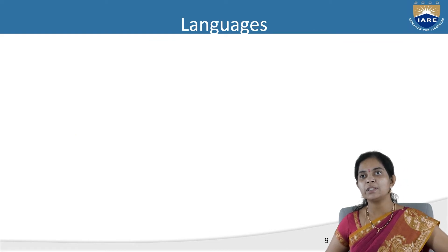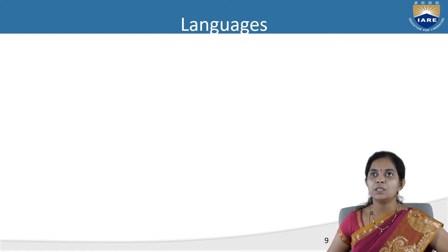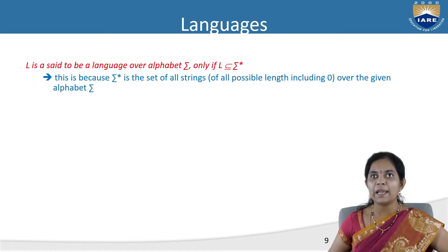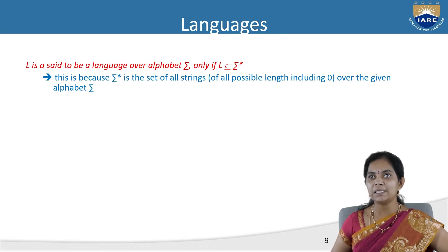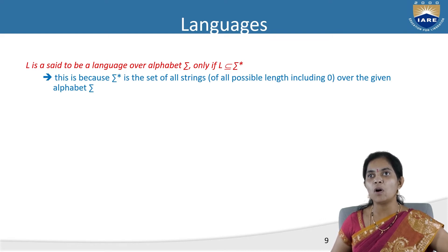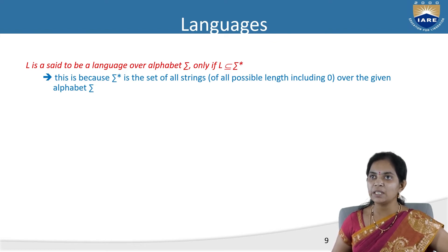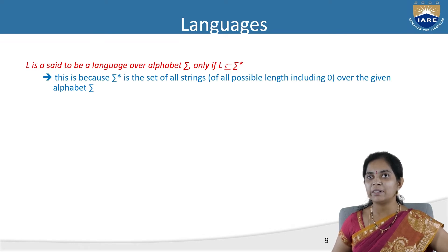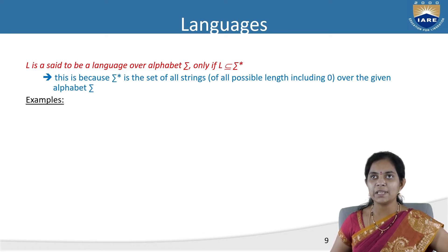The next central concept is languages. A language is said to be a language over alphabet sigma only if L is a subset of sigma star. Sigma star is the set of all strings of all possible lengths including 0, over the given alphabet.